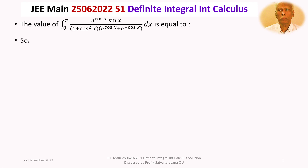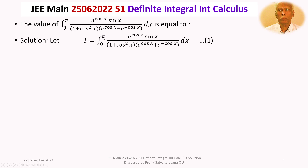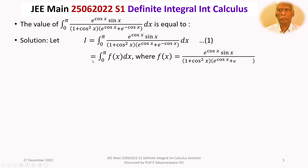We now discuss the solution in detail. Let I be the definite integral from 0 to π of e^(cos x) · sin x divided by (1 + cos²x)(e^(cos x) + e^(−cos x)) dx. Let us call this integral equation 1, written as the integral from 0 to π of f(x) dx, where f(x) = e^(cos x) · sin x / [(1 + cos²x)(e^(cos x) + e^(−cos x))].